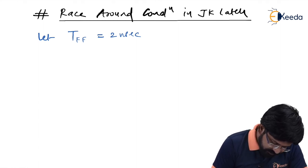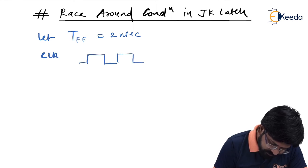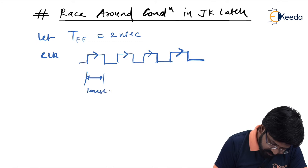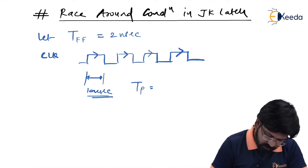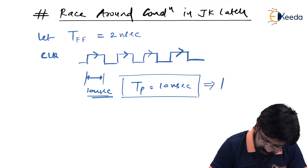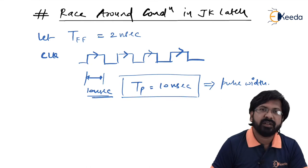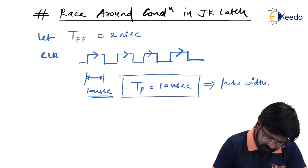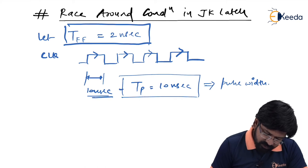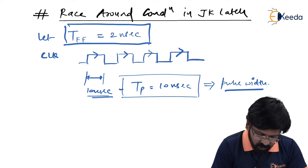For the clock, let us assume it is positive level-triggered, and let the width of the high pulse Tp be 10 nanoseconds. So the pulse width Tp equals 10 nanoseconds. Now you need to focus on these two figures: the propagation delay of the flip-flop is 2 nanoseconds, and the pulse width Tp equals 10 nanoseconds.